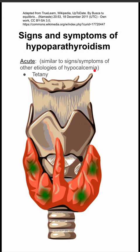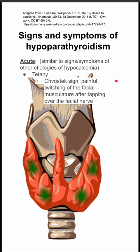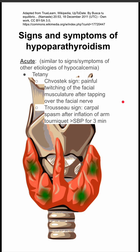These symptoms include tetany, like Chvostek sign — a painful twitching of the facial musculature after tapping over the facial nerve — and Trousseau sign, which is a carpal spasm after inflation of an arm tourniquet greater than systolic blood pressure for three minutes.